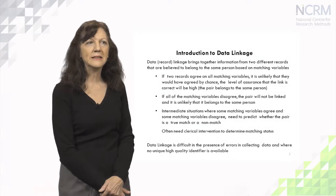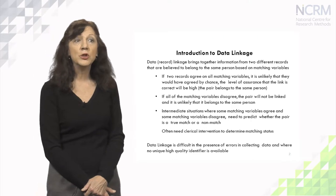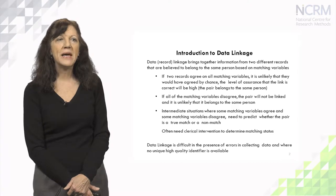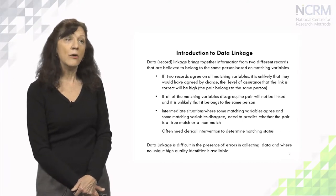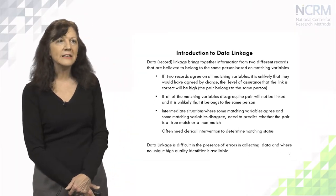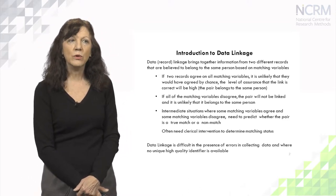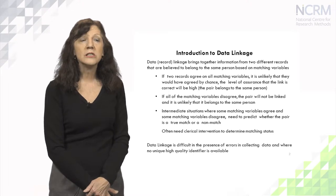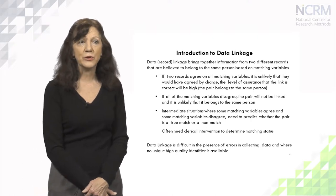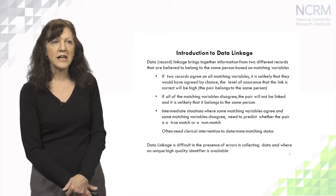So what do we mean by data linkage? Data linkage brings together information from two different records that we believe to belong to the same person based on a set of matching variables. Now if the two records agree on all the matching variables, it is unlikely that they would have agreed by chance and we can be quite assured that the link is correct. If all of the matching variables disagree, the pair will not be linked and it is unlikely that it belongs to the same person.